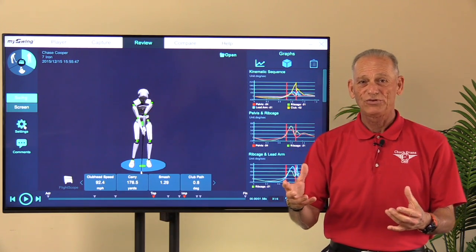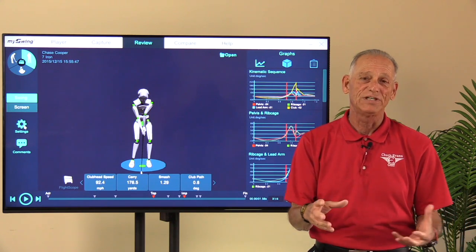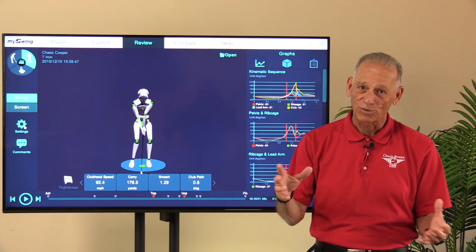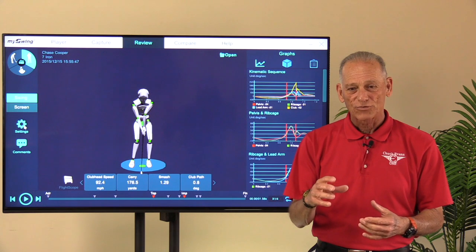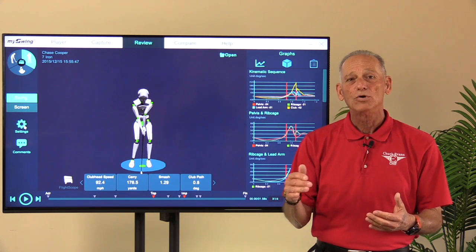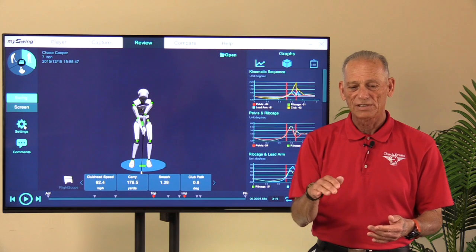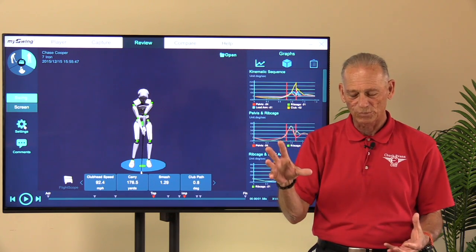2D obviously is what you see on your video camera when you're taking video out on your tee line with your phone or iPad or whatever, and 3D gives us 3D motion capture, so we get not only the horizontal and the vertical, but we get the depth of field as well.